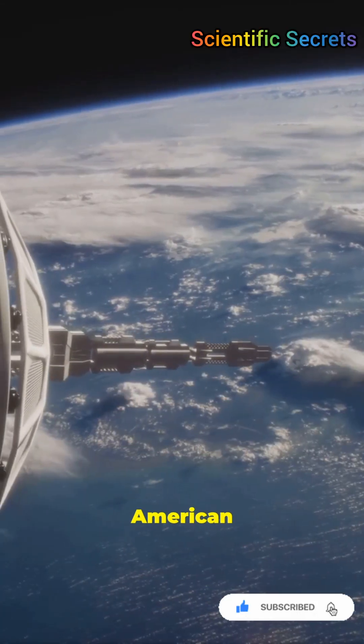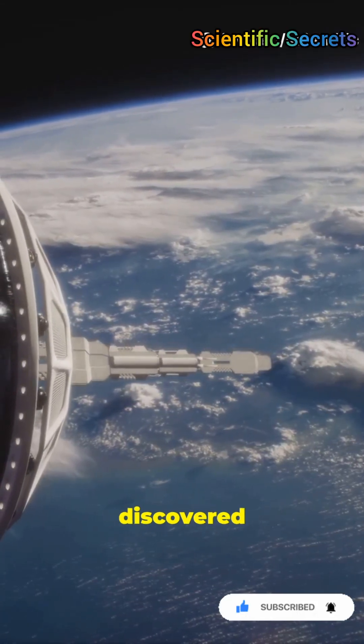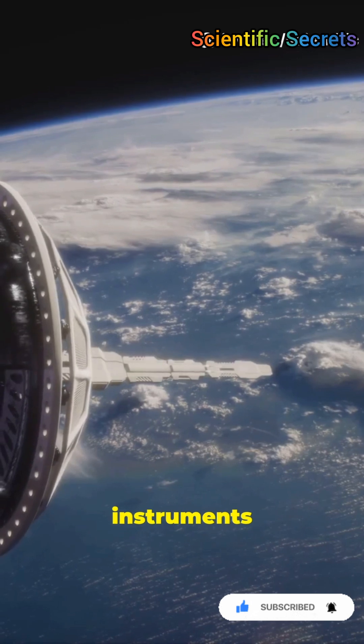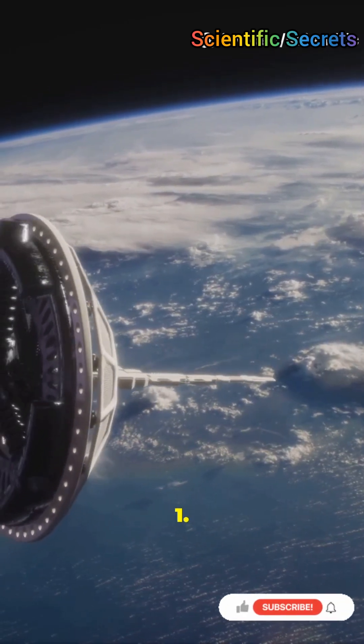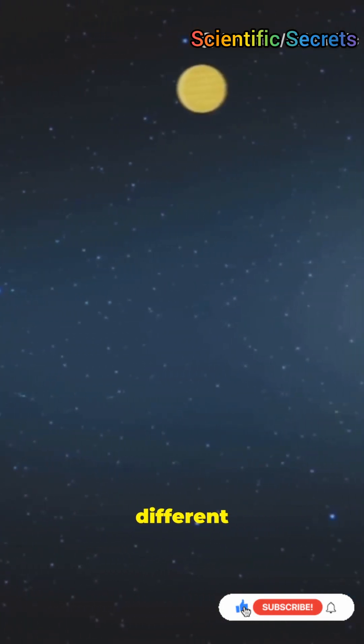The belts are named after American physicist James Van Allen who discovered them in 1958 using instruments aboard the first U.S. satellite Explorer 1. The belts are located at different altitudes.